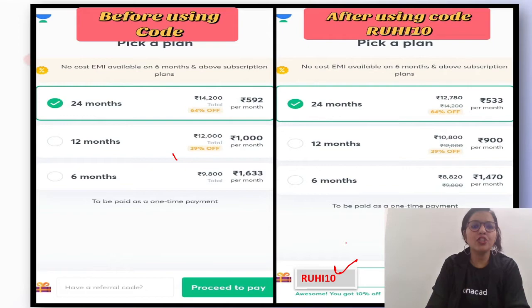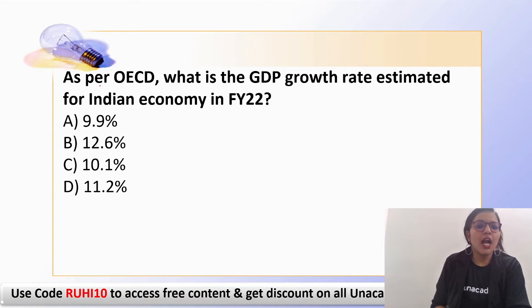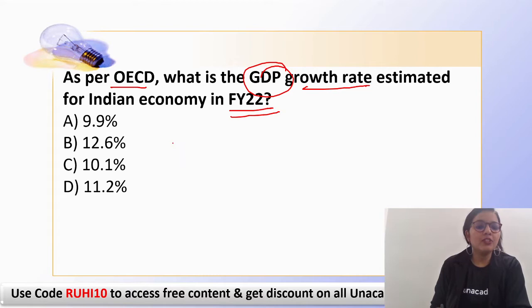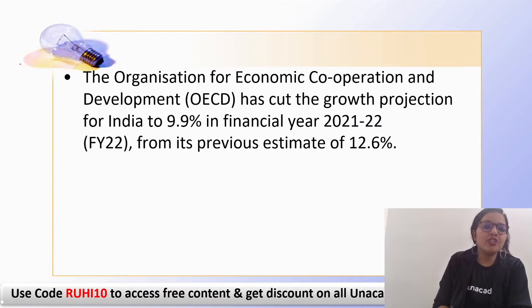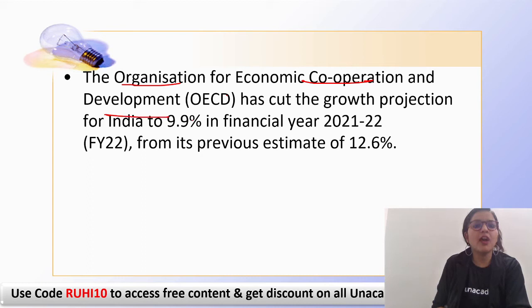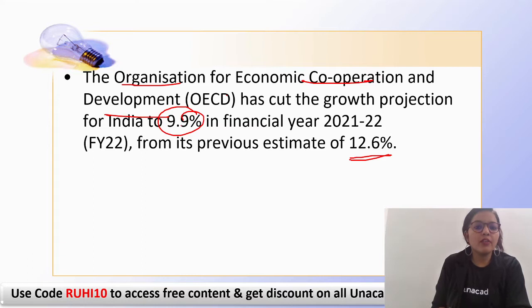Let's start today's session covering MCQs from June current affairs. The first question: as per OECD, what is the GDP growth rate estimate for the Indian economy for fiscal year 2022 — is it 9.9%, 12%, 16%, 10%, or 11.2%? The correct answer is 9.9%. As per the OECD — Organisation for Economic Co-operation and Development — the forecast for 2021 is 9.9%, revised down from the earlier estimate of 12.6%.